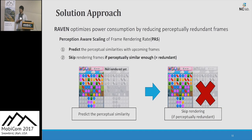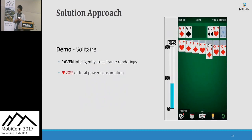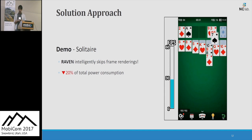Next, let's see our solution approach. We present a system called Laban. Laban regulates rendering of perceptually redundant frames by our novel method: perception-aware scaling of frame rendering rate. At a higher level, it is simply twofold. First, it predicts the perceptual similarity of the current frame to upcoming frames. Second, it skips rendering frames if the upcoming frames are predicted to be very similar. Here is a short video demo of our proposed solution. The FPS bar shows the average FPS in a one-second window, so you can see it works seamlessly while skipping frames.